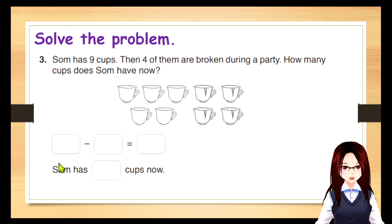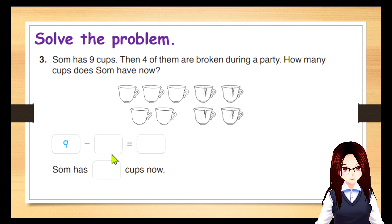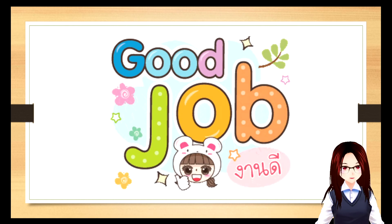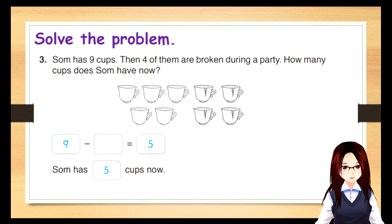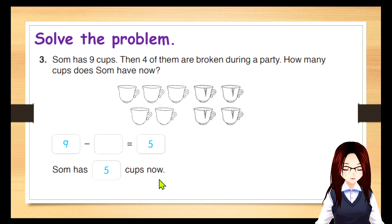Next, what do we put here? Nine. Nine minus four. So, it's nine minus four equals five. So, you say, Sam has five cups now.